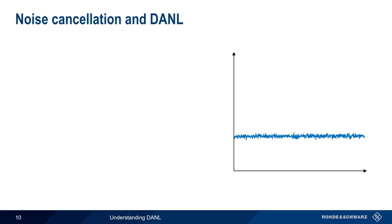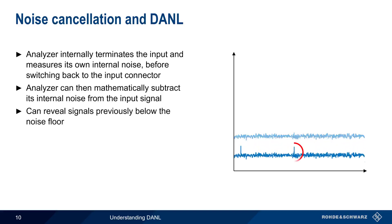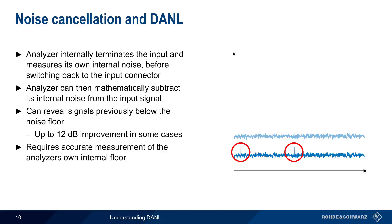Another way of reducing DANL is something called noise cancellation. When noise cancellation is enabled, the spectrum analyzer internally terminates its input and measures its own internal noise before switching back to the input connector. This initial measurement allows the analyzer to subtract its own internal noise from the input signal, thus reducing DANL and increasing measurement accuracy. Noise cancellation can also reveal signals that would otherwise remain unseen beneath the noise floor. This improvement can be up to 12 dB in some modern analyzers. Note that in order for noise cancellation to be effective, a spectrum analyzer must be able to first make an accurate measurement of its own internal noise.